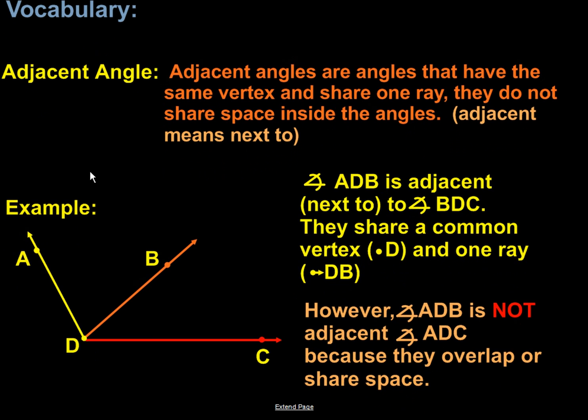If you look at the example, we have angle ADB and angle DBC as adjacent angles. The reason that they're adjacent is because they share the same ray, ray DB, and they also share the same vertex, the center point for each of the angles, which is D.